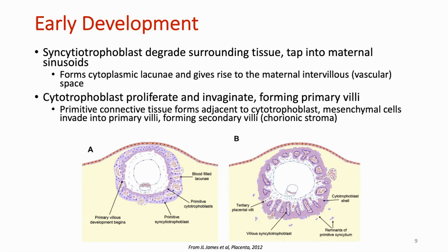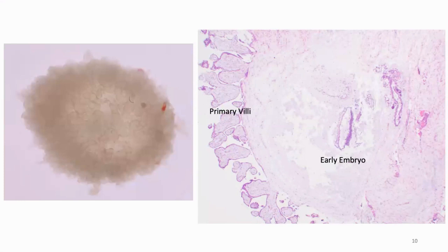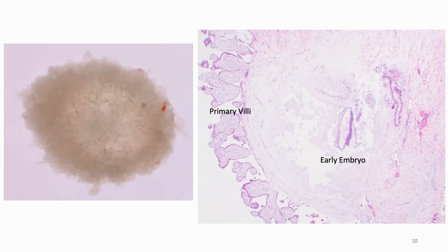The cytotrophoblast proliferate and invaginate, forming primary villi. Primitive connective tissue forms adjacent to the proliferating cytotrophoblast, with mesenchymal cells invading into the primary villus structures, forming secondary villi. This is a gross image from a dissecting microscope showing an early gestational sac, still evenly covered by chorionic villi circumferentially. Eventually, some of these villi will regress and become the avascular chorionic membrane, or what we call the chorionic laeve. The other perfused chorionic villi will then continue to proliferate and eventually form the parenchyma of the placental disc.